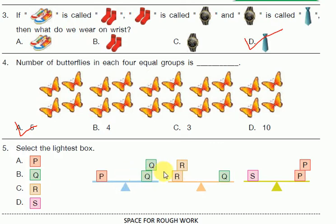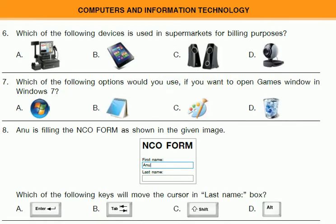The patterns are P, R, Q, S. R is the right answer for this question. Next section is Computer and Information Technology. Question 6: Which of the following devices is used in supermarkets for billing purposes? The answer is A.